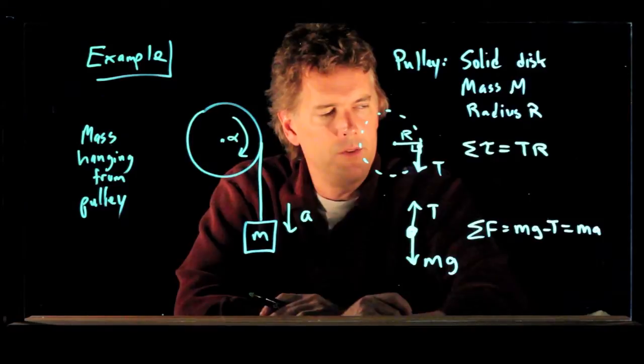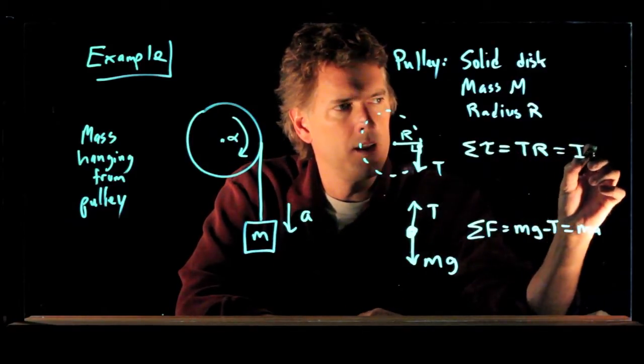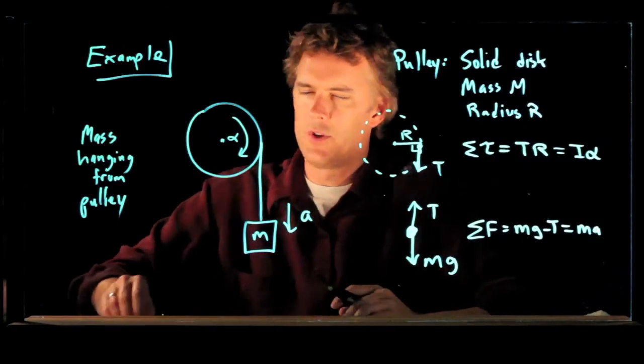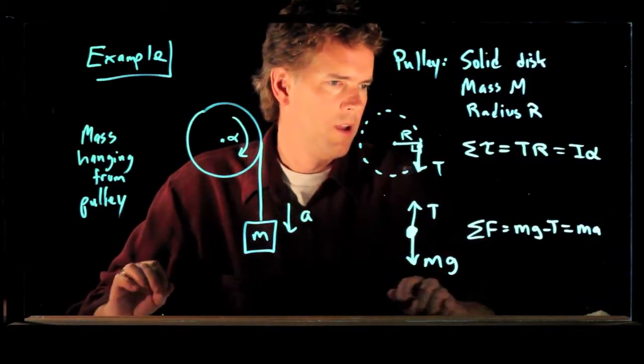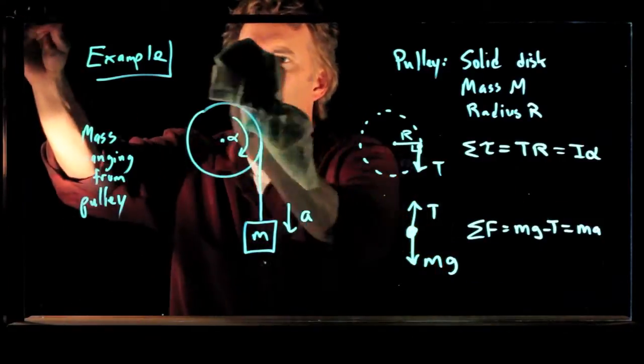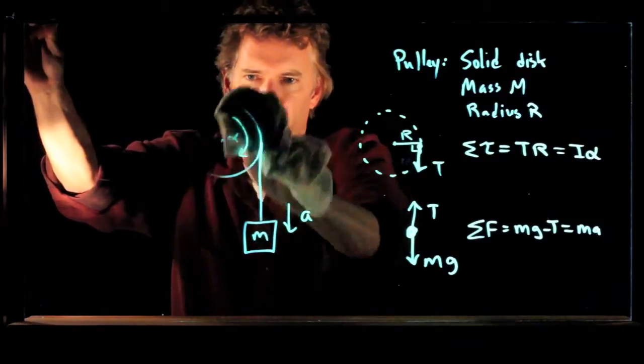And torque, net torque, is equal to I times alpha. And so now we have two equations. But we have to identify some other relationships to, in fact, solve this thing for A.